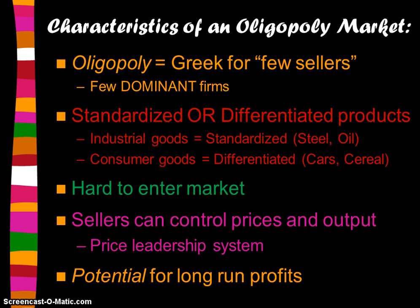In oligopoly, there's potential for long-run profits. Oligopoly is kind of the wild card of the market structures, because there are a lot of unknowns in the long run. Anything can happen, because with just a few key players in the game, it's hard to know what they're going to do and how they're going to act and react to one another. There are many unknowns.